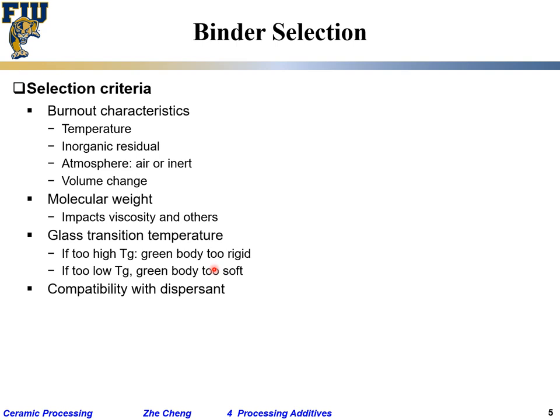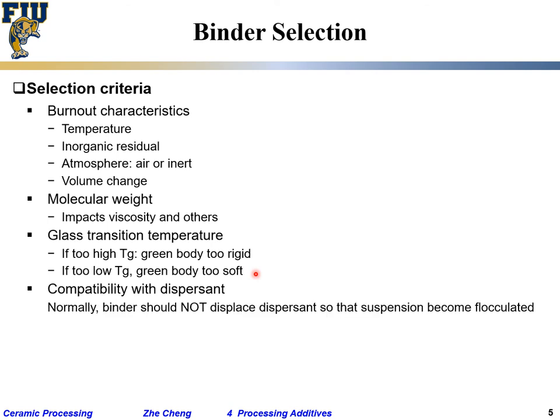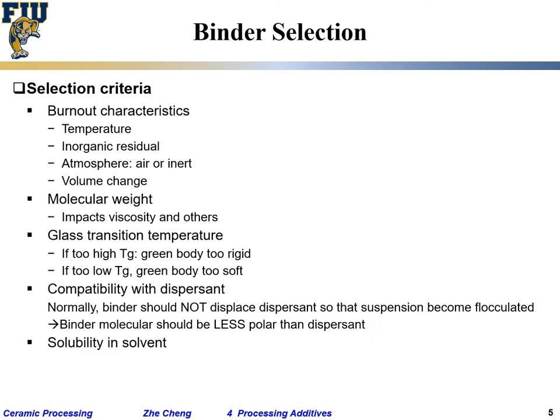Too low a glass transition temperature makes the material too soft. So depending on your application and your plasticity and viscosity needs, you choose accordingly. Compatibility with dispersant is also key: normally the binder should not displace the dispersant and cause the suspension to flocculate. The binder molecule should be less polar than the dispersant. And finally, solubility in solvent — some binders are water-soluble, others are solvent-soluble.